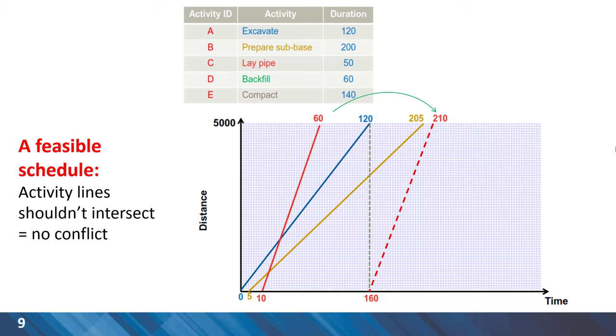For laying pipe, we consider five days of buffer for the start. So starting at day 10, duration of 50 gives us an early finish time of 60. However, we can see that activity C can catch up with the other two activities and therefore we have the intersection of lines and this is an indication of conflict between activities.